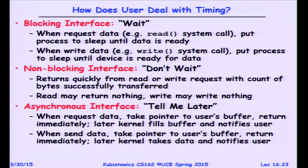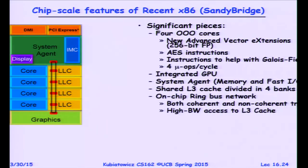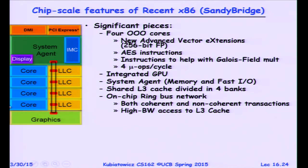If you've allocated a buffer in user memory and handed it to the kernel, once notified you can put it on a linked list for processing or pass the buffer to some internal structure. All the asynchronous notification tells you is that it's done — it's up to you to do the right thing.